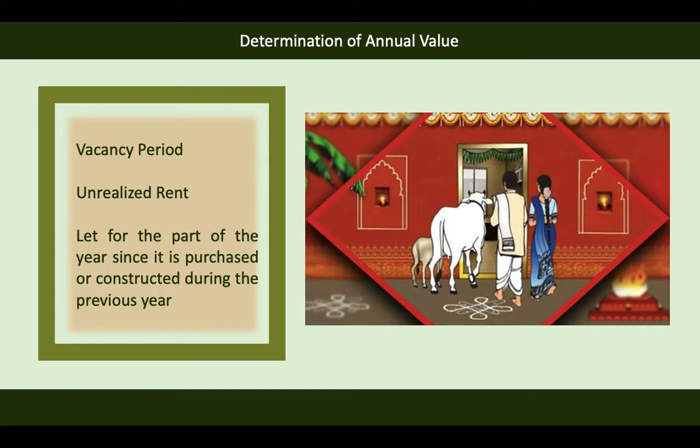The third concept is a property let out for part of the year because it was purchased or constructed during the previous year. For example, if a house came into existence during the previous year in the month of September, you should calculate municipal rental value, fair rental value, and standard rent from the month of September, not for the full year.